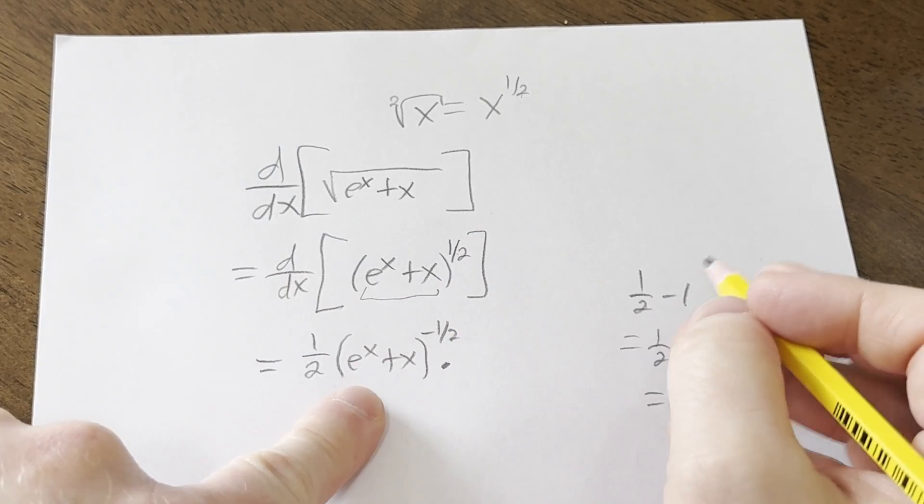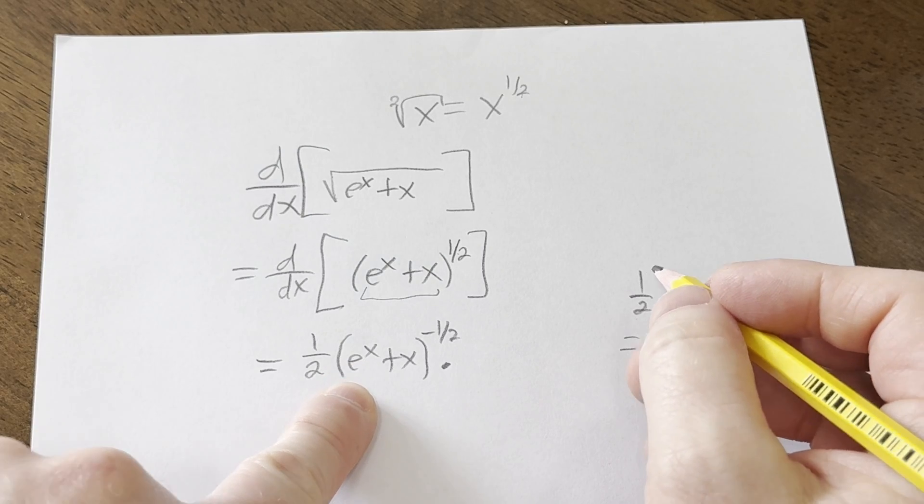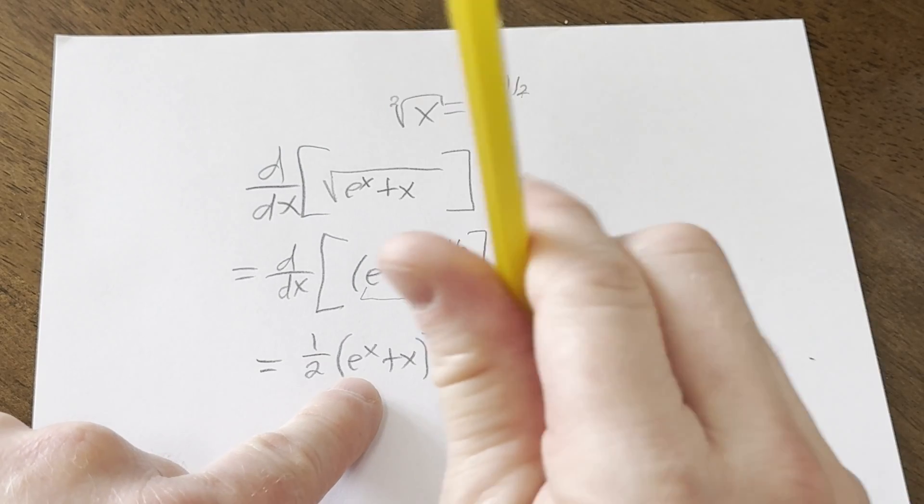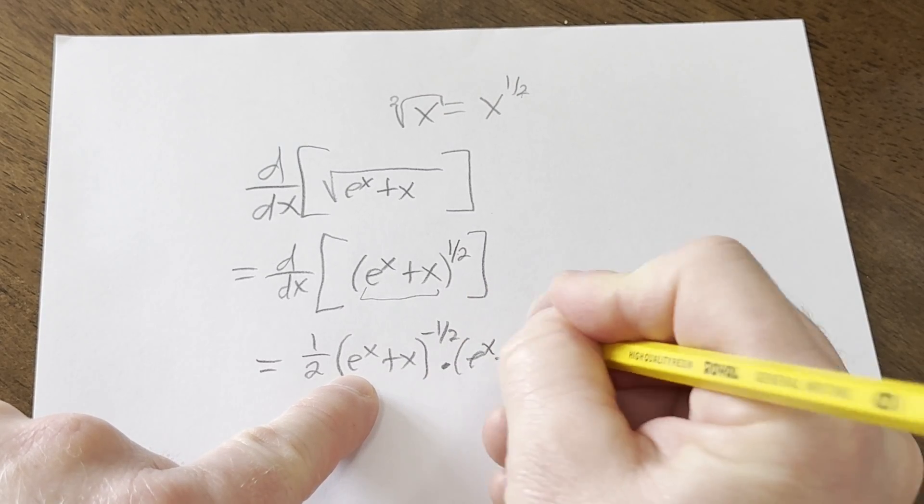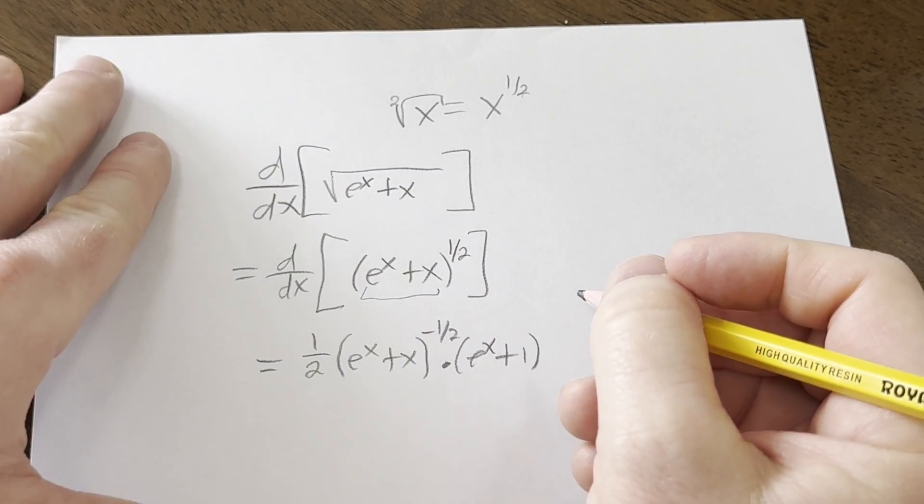Times the derivative of the inside function. Well, the inside function here is e to the x plus x. So the derivative of e to the x is e to the x. The derivative of x is 1. And that's pretty much it.